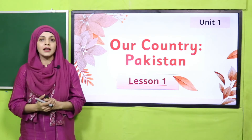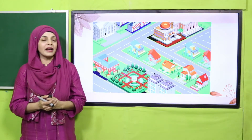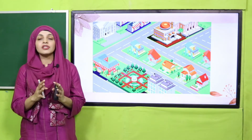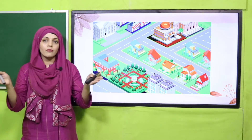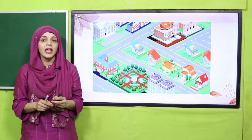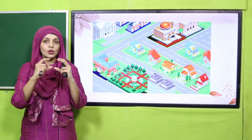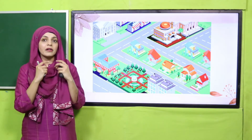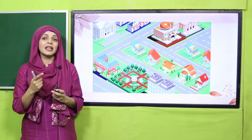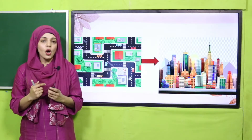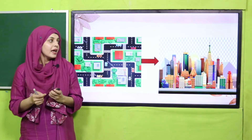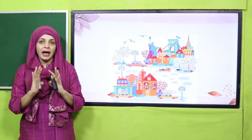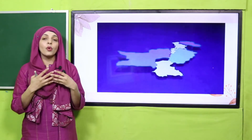I have given you a complete introduction of this unit and now we will start the first lesson of 'Our Country.' As in Grade 1 you studied about neighborhoods — a neighborhood has different places, and when they combine we call it a neighborhood. Similarly, you identified pictures on a pictorial map. So you know what a map is. A lot of neighborhoods make up a city, and a lot of cities combine to form a province.